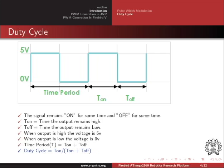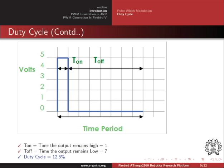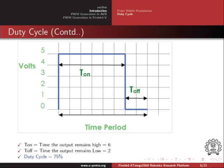The duty cycle is given by the formula: T-on divided by (T-on plus T-off), multiplied by 100. In this case, the duty cycle is 50% as the signal is on and off for equal periods of time. For the signal shown, the time period is divided into 8 parts; the signal is high for one part and low for the rest 7, giving a duty cycle of 1/8 × 100 = 12.5%. In another case, T-on is 6 parts and T-off is 2 parts, so the duty cycle is 3/4 × 100 = 75%.